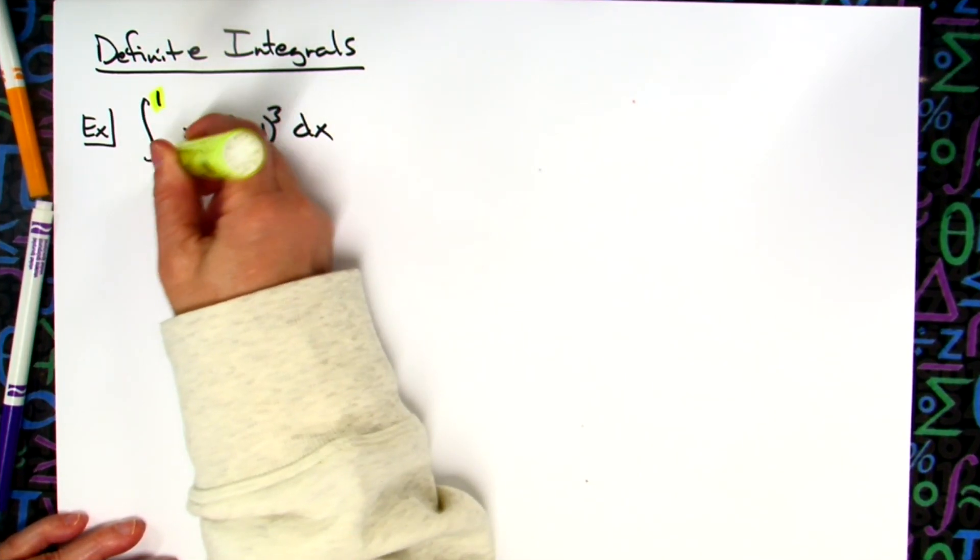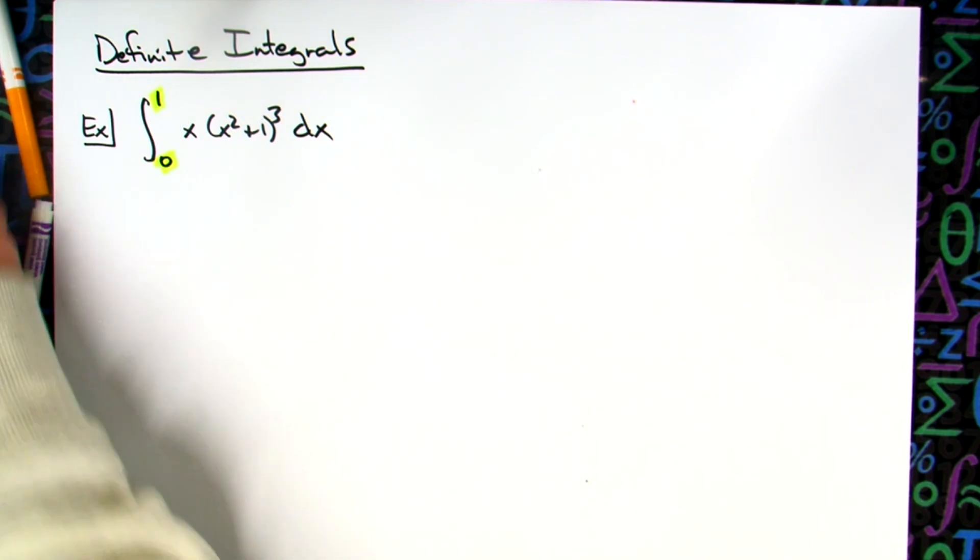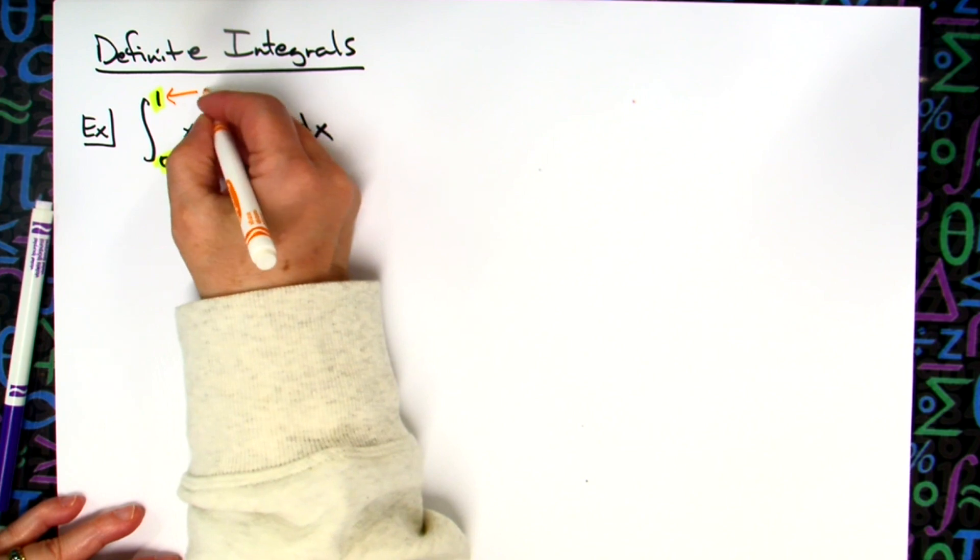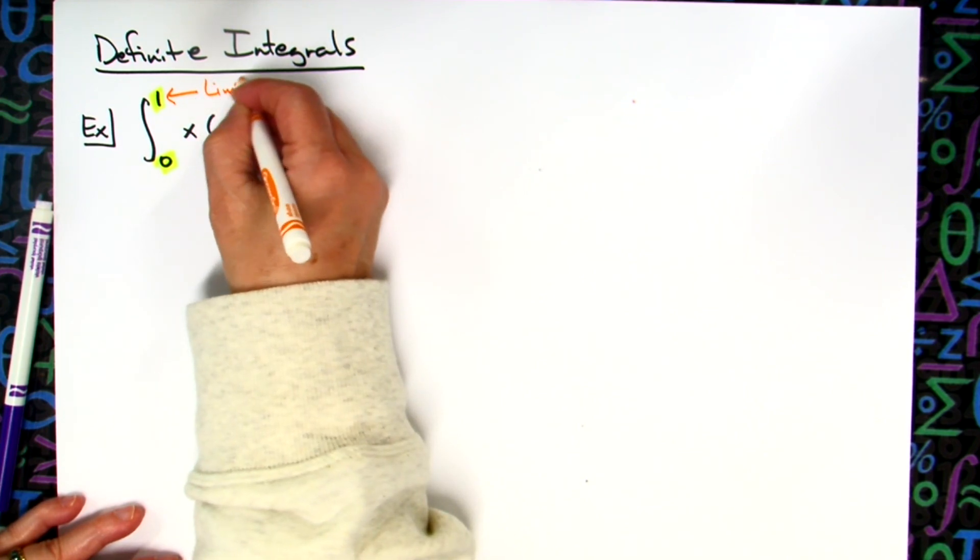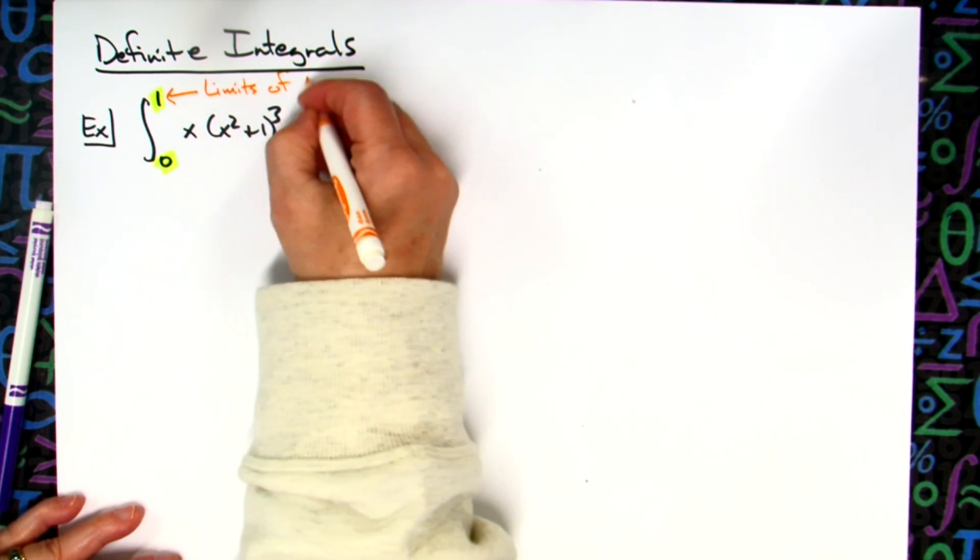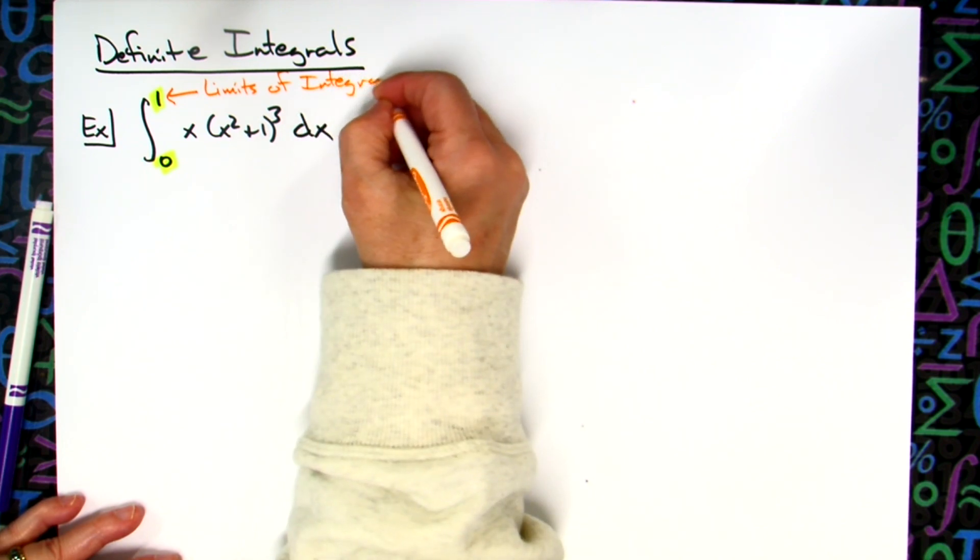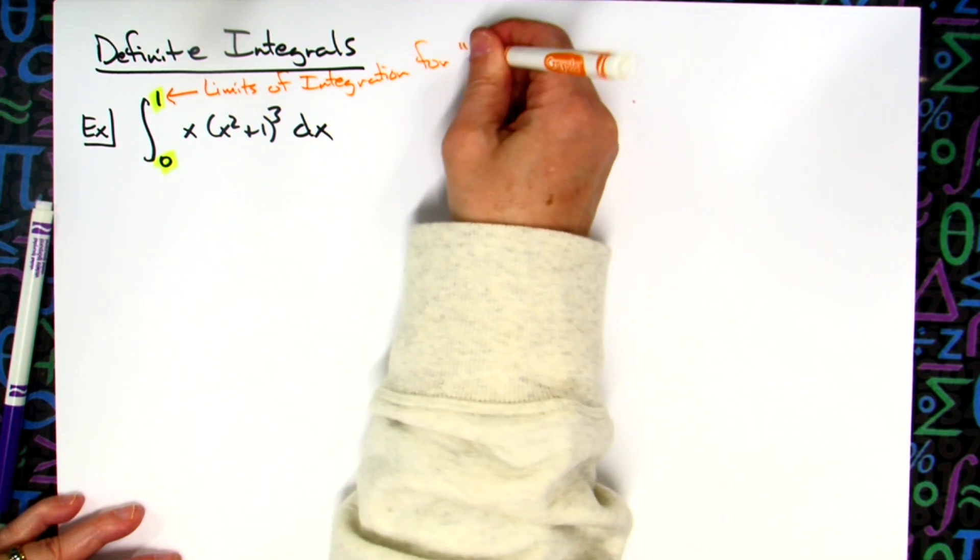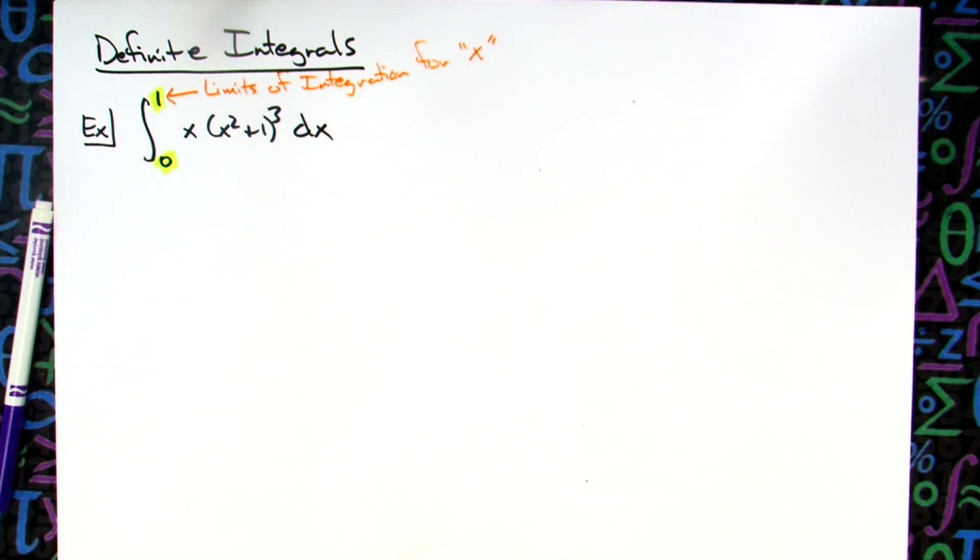I'm going to highlight the one and the zero because we need to emphasize these are limits of integration for x. Very important concept to conceptually understand. This is all written in terms of x. I got a dx going on here. These are limits of integration for x.